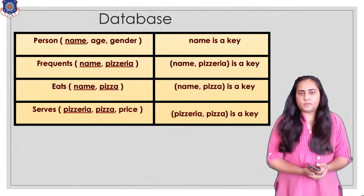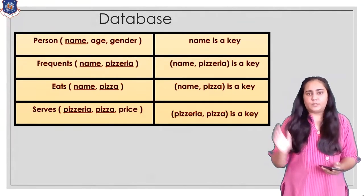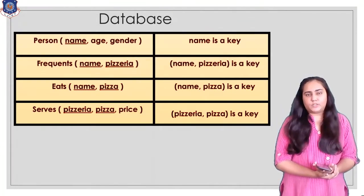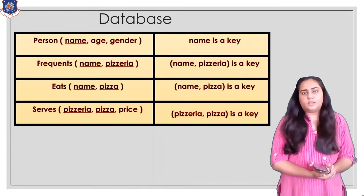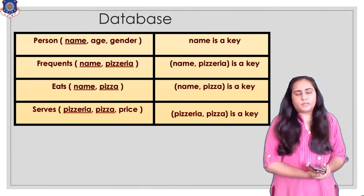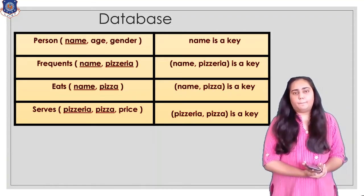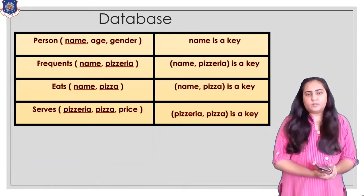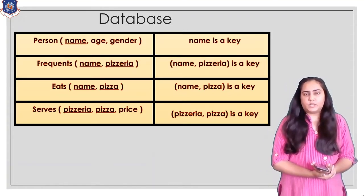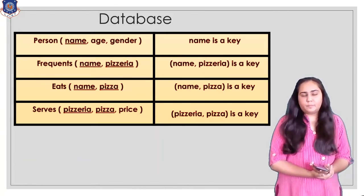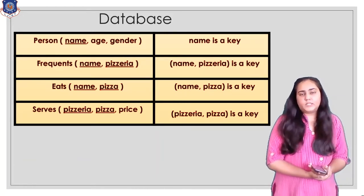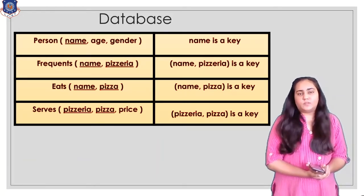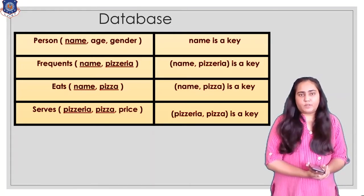This is the database that we will be using for these practice questions. This database consists of four tables. The first table is called person, and it contains columns name, age, and gender, where name is the primary key.